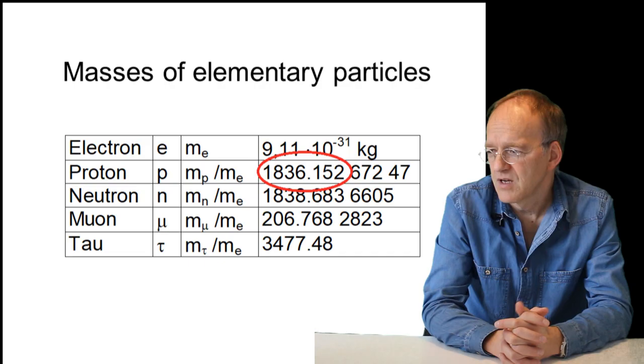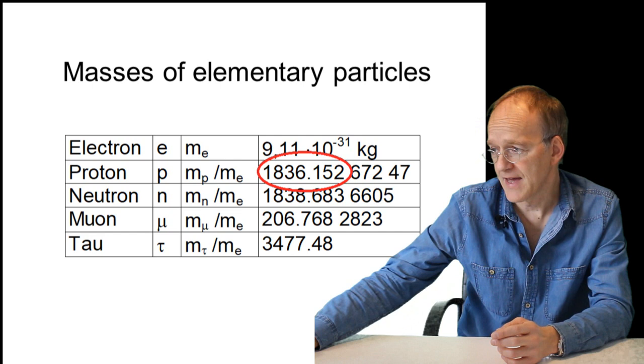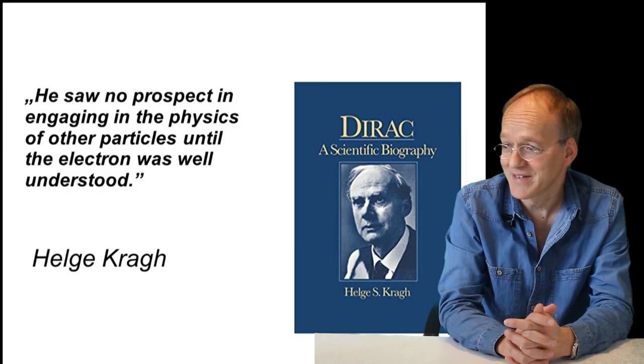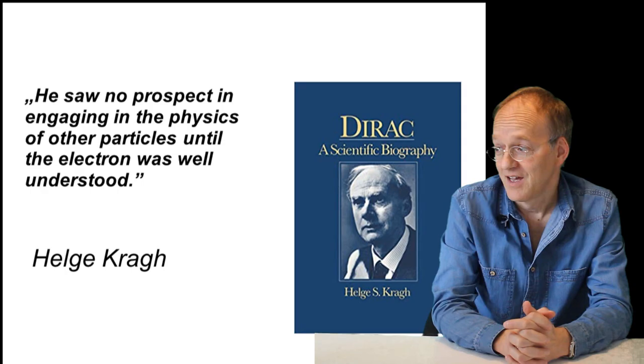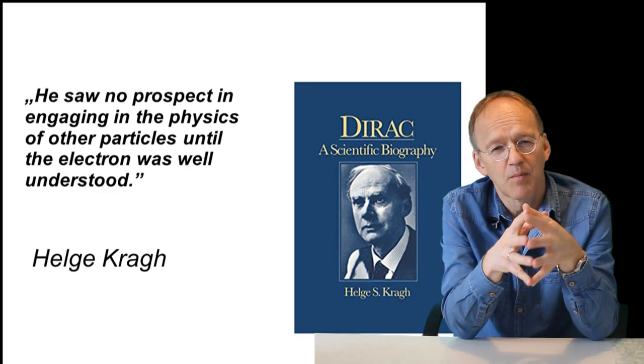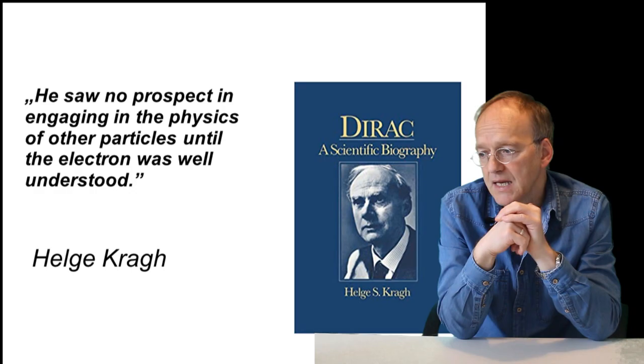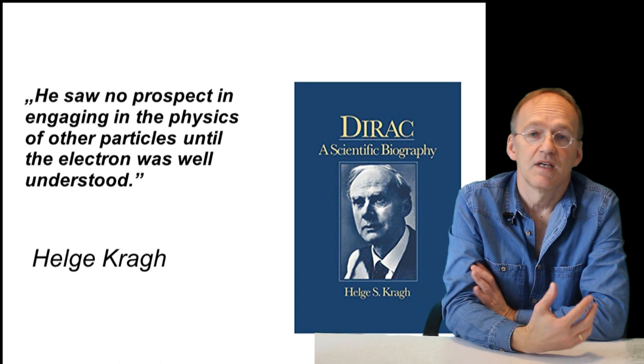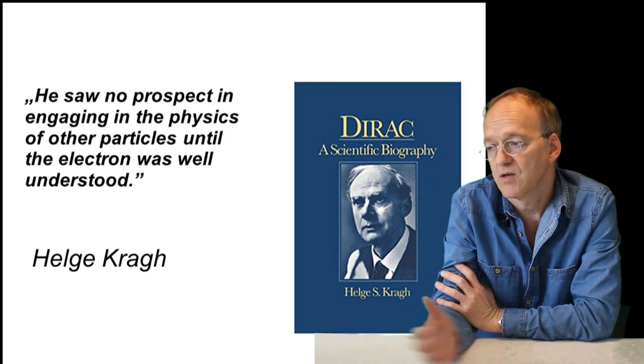He was not so much interested in other numbers like the muon mass and the tau mass and so on. In fact, as his biographer says, he saw no prospect in engaging in the physics of other particles until the electron was well understood. This remained his most important goal with respect to microscopic physics: to calculate the mass of the electron and the proton and to understand it. He was always interested in numbers. 1836 is such an unexplained number.